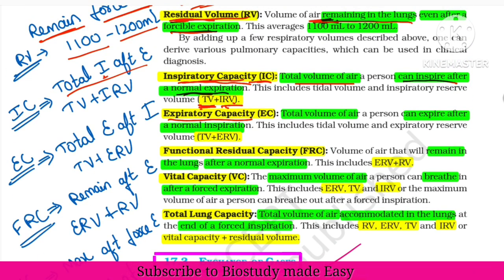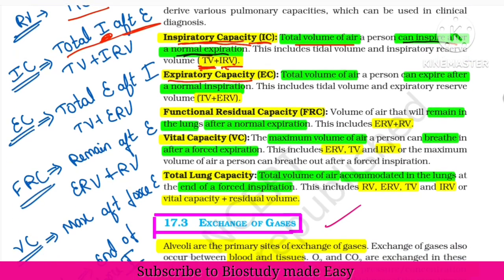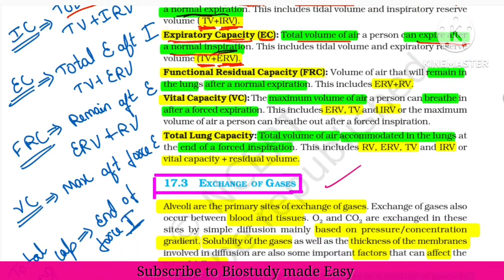Next, expiratory capacity (EC) — in the same way, it is the total volume of air a person can expire after a normal inspiration. IC uses TV plus IRV; EC uses TV plus ERV.